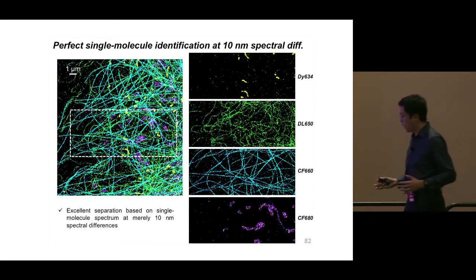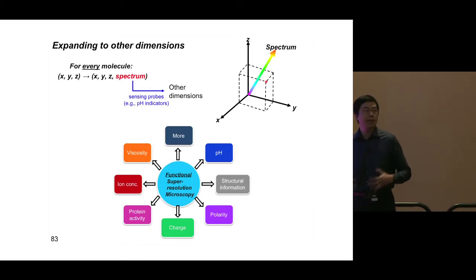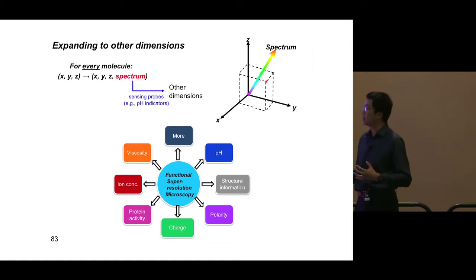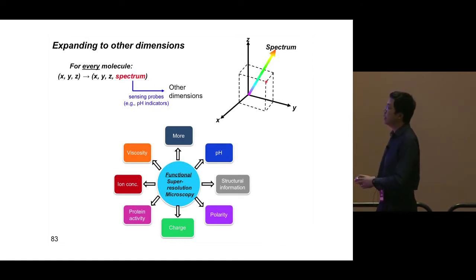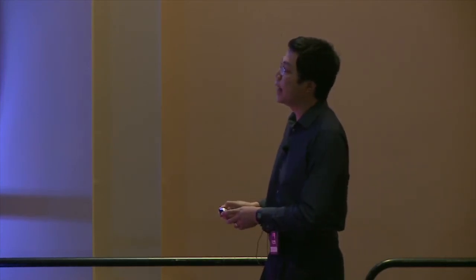We have achieved spectrally resolved super-resolution microscopy, and our next goal is to expand this capability into new dimensions. Previously, structural super-resolution microscopy already enabled measurement of the XYZ position in three-dimensional space for each molecule. What we have now added is a new dimension of spectrum, so we have XYZ plus the spectrum of each single molecule inside the cell.